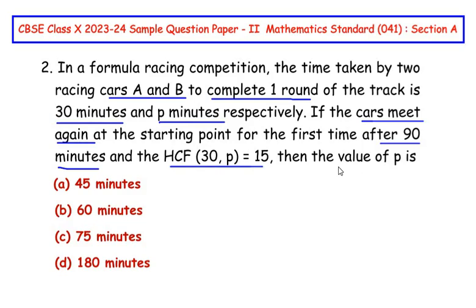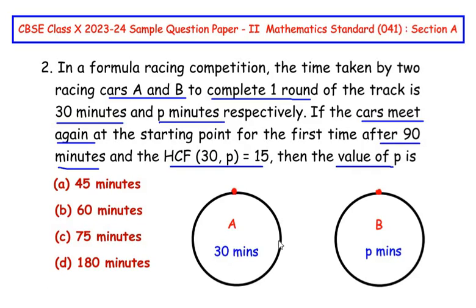Let us try to understand the question first and I will draw a diagram to explain. This is the racing track along which the two racing cars have to take one round. The time taken by racing car A is 30 minutes to go one round along this track and the time taken by racing car B is given as p minutes and the HCF of the time is given as 15.